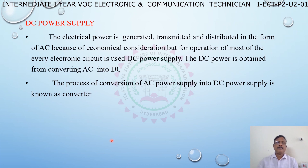Electrical power is generated, transmitted, and distributed in the form of AC because of economical considerations. However, the operation of most electronic circuits requires DC power supply. The DC power is obtained by converting AC into DC.